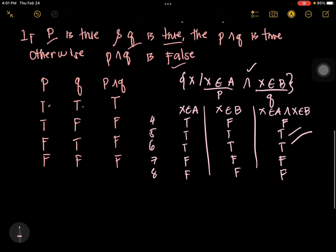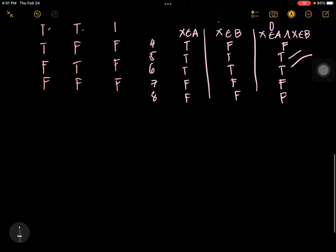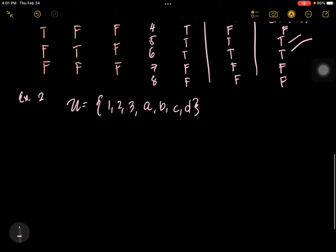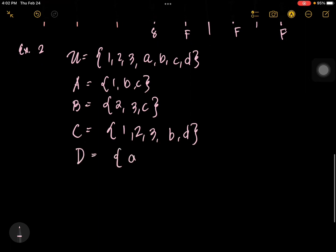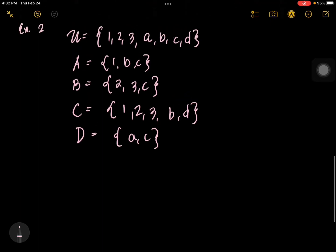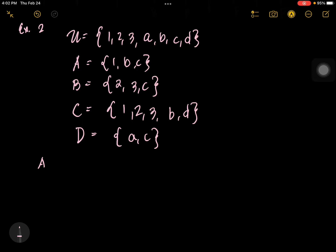So this is intersection. Let's have example number 2. If you have the universal set {1, 2, 3, A, B, C, D}, set A = {1, B, C}, set B = {2, 3, C}, set C = {1, 2, 3, B, D}, and set D = null — let's try to solve: A intersection B, A intersection C, B intersection C, and C intersection D.